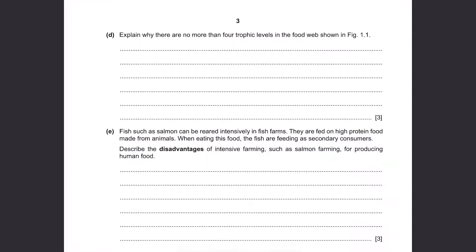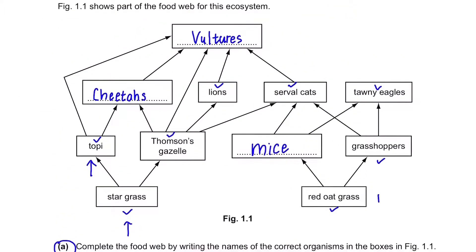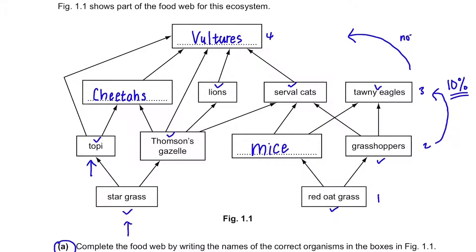Part D: explain why there are no more than four trophic levels in the food web shown in figure 1.1. This is a 3-mark question so we need three points. Going back to our food web, we can see there are four levels. When a new level is formed, for example from primary consumer to secondary consumer, energy is transferred to the next level. But not all energy is transferred — only 10% is transferred and the rest is lost as heat. So by the time you reach the fourth trophic level, there is only a small amount of energy and it is not enough to support another level.